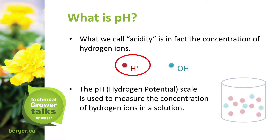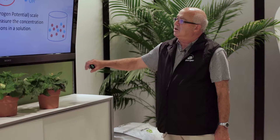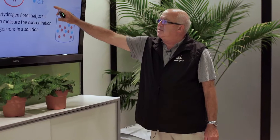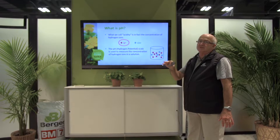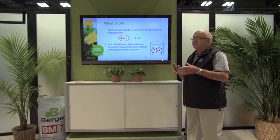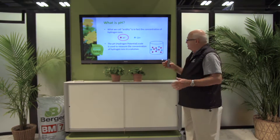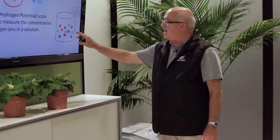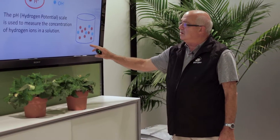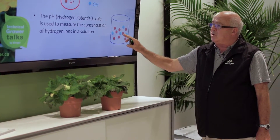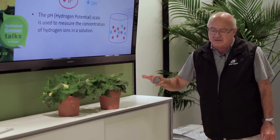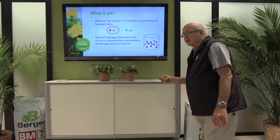The pH hydrogen potential scale is used to measure the concentration of hydrogen ions in the solution. The OH ions, which are hydroxyl ions — the more hydroxyl ions in the mix, the pH will rise. So in this solution, if we have more of the H as opposed to the OH ions, it will be high in hydrogen ions and then will cause an acidic reaction.